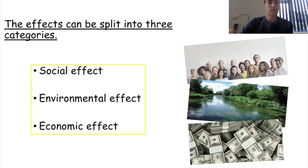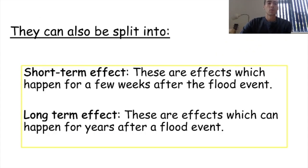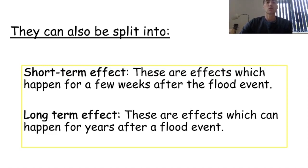The effects of flooding can be split into three types. We can have social effects to do with people, environmental effects to do with the environment, nature, and landscape, and economic effects to do with money. We can also split these effects into short-term effects and long-term effects. Short-term ones are effects which happen for a few weeks after a flood event; long-term effects are ones which can happen for even up to years after the event.